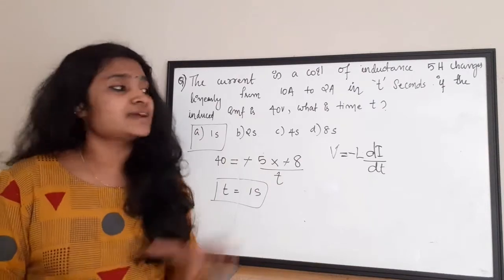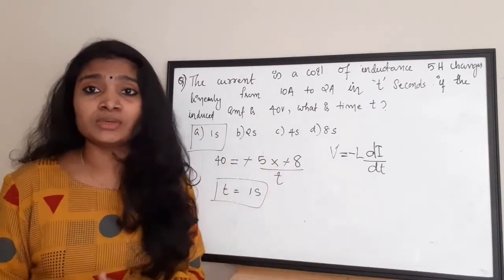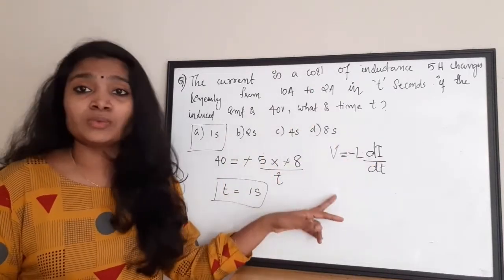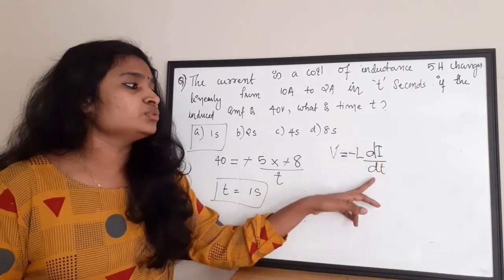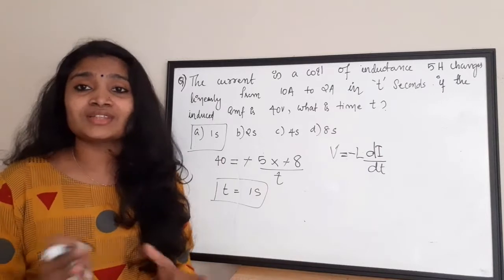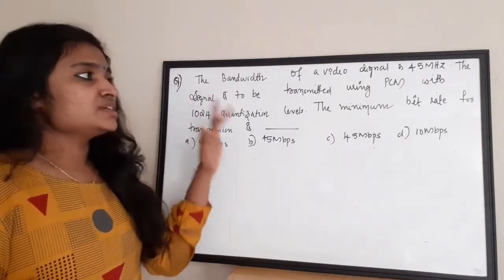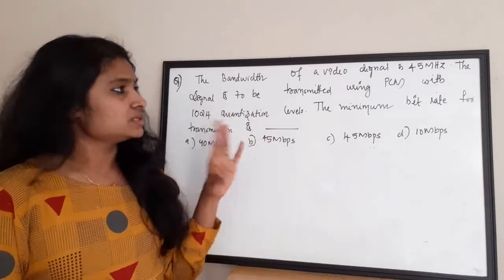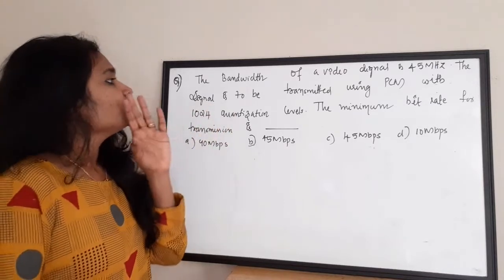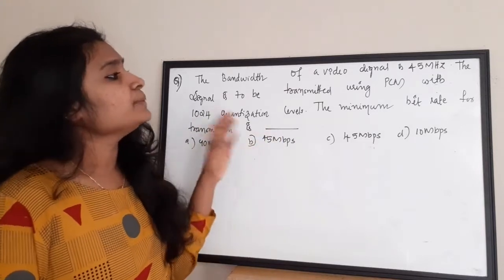In order to solve this question you only need to understand the basic equation, substitute the values from the question, and know how to identify the values for dI and dT. The correct answer is option A. The next question: the bandwidth of a video signal is 4.5 megahertz. The signal is to be transmitted using PCM with 1024 quantization levels. The minimum bit rate for transmission is what?